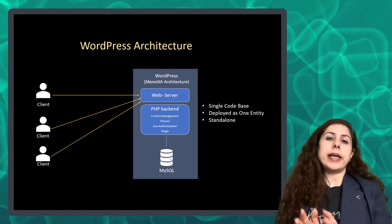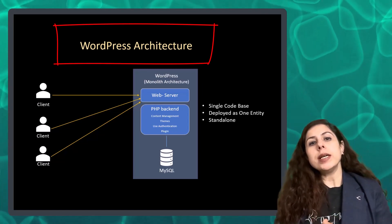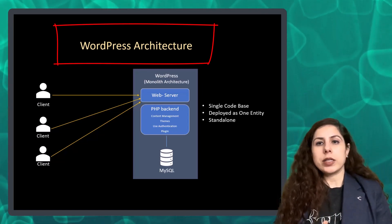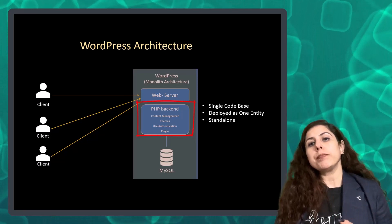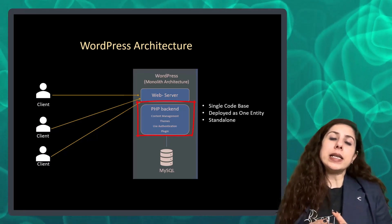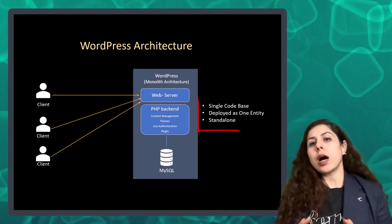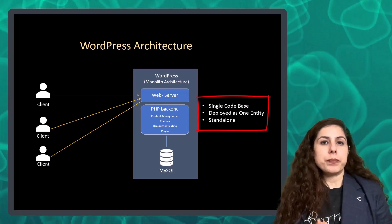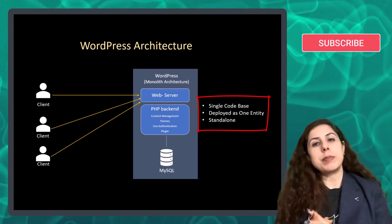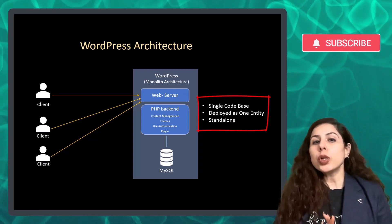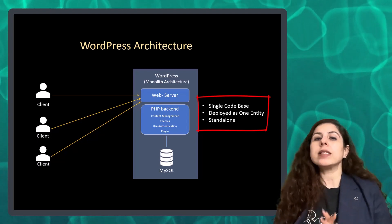Now, take an example of one of the most used content management systems in the industry: WordPress. WordPress is implemented using monolithic architecture. All of its core functionality for managing content, user authentication, themes, and plugins are tightly integrated into a single code base. When you use WordPress, you typically download and install one single package and all of its components are interconnected and work together seamlessly. This proves that monolithic architecture is still widely used and suits a specific type of environment and requirement.